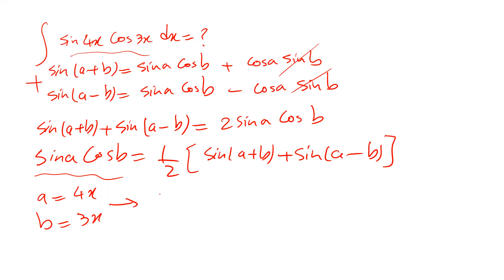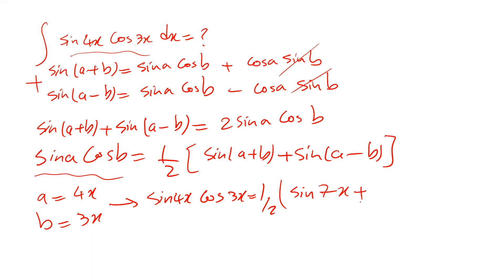Therefore, using this formula, you can conclude that sine 4x cosine 3x is equal to one divided by two times sine(7x) plus sine(4x − 3x), that is sine(x).